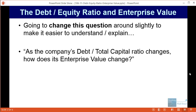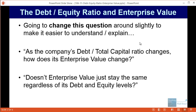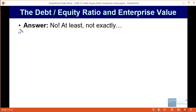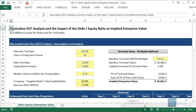I'm going to rephrase this question a little bit to make it easier to explain: as the company's debt to total capital ratio changes, how does its enterprise value change? It's really saying the same thing, because if total capital stays the same — which we're assuming it does — then as the debt to total capital ratio increases, the debt to equity ratio will also increase. Doesn't the enterprise value just stay the same regardless of its debt and equity levels? The answer is actually no, or at least not exactly.